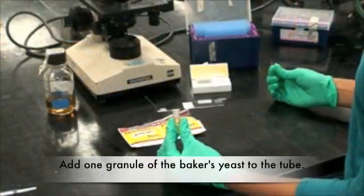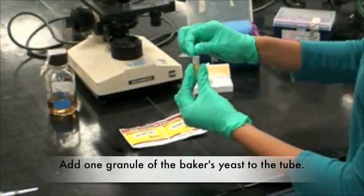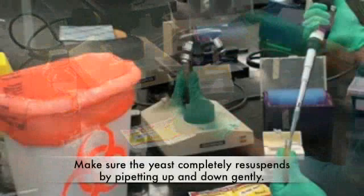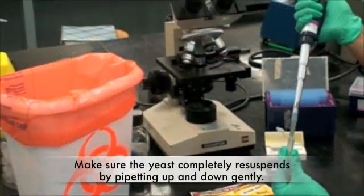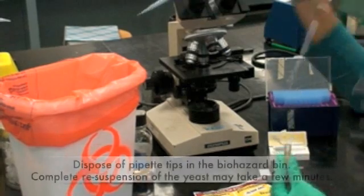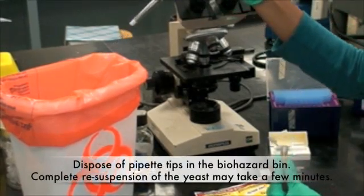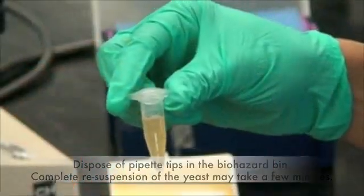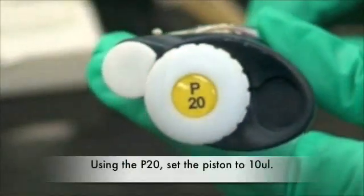Add one granule of the baker's yeast to the tube. Make sure the yeast completely resuspends by pipetting up and down gently. Dispose of pipette tips in the biohazard bin. Complete resuspension of the yeast may take a few minutes.